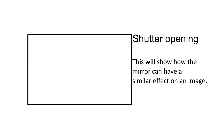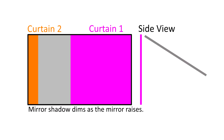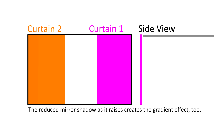Another cause would be mirror mistiming. If the mirror rises after the curtain starts to open, or closes before the curtain completely finishes its travel, then part of the frame will not be properly exposed. As the mirror rises, more light will be received by the frame, and again, this will cause a darkening gradient.